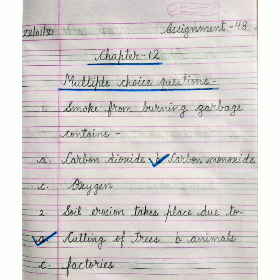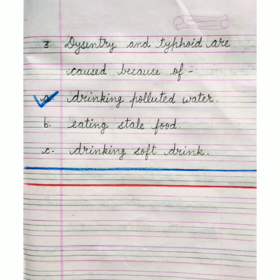Question 1: Smoke from burning garbage contains — A. Carbon dioxide, B. Carbon monoxide, C. Oxygen. The correct answer is option B, carbon monoxide. Question 2: Soil erosion takes place due to — A. Cutting of trees, B. Animals, C. Factories. The correct answer is option A, cutting of trees. Question 3: Dysentery and typhoid are caused because of — A. Drinking polluted water, B. Eating stale food, C. Drinking soft drink. The correct answer is option A, drinking polluted water.